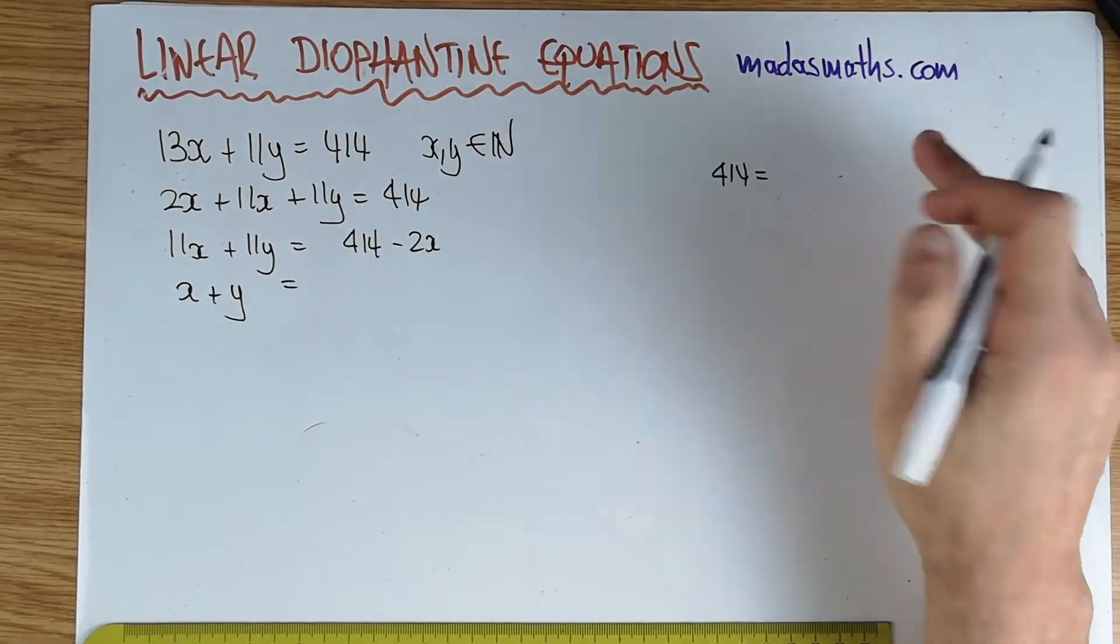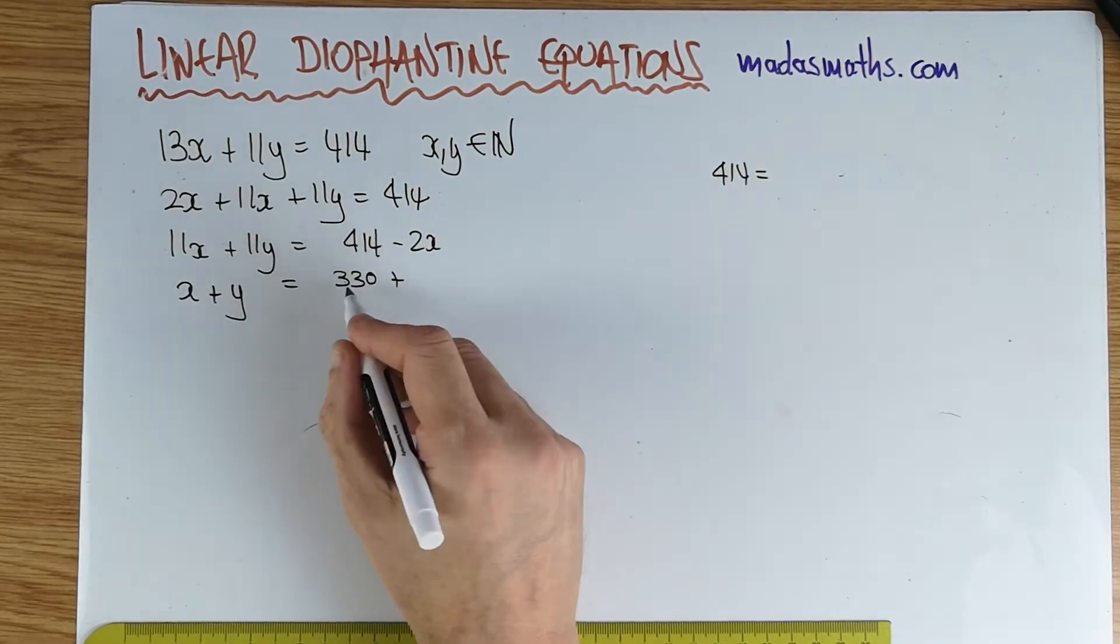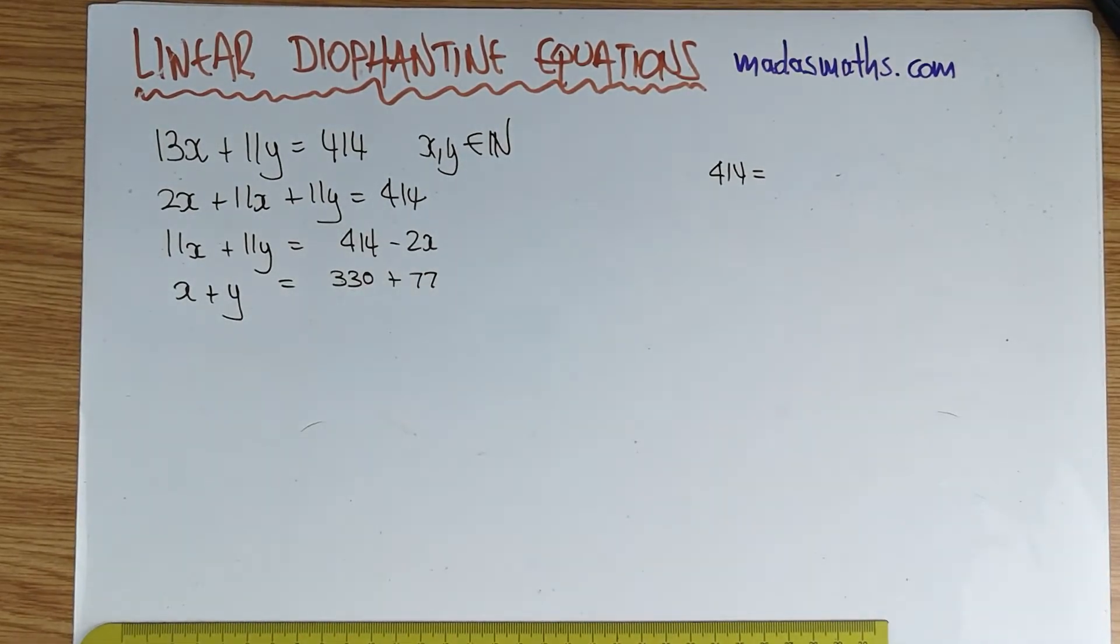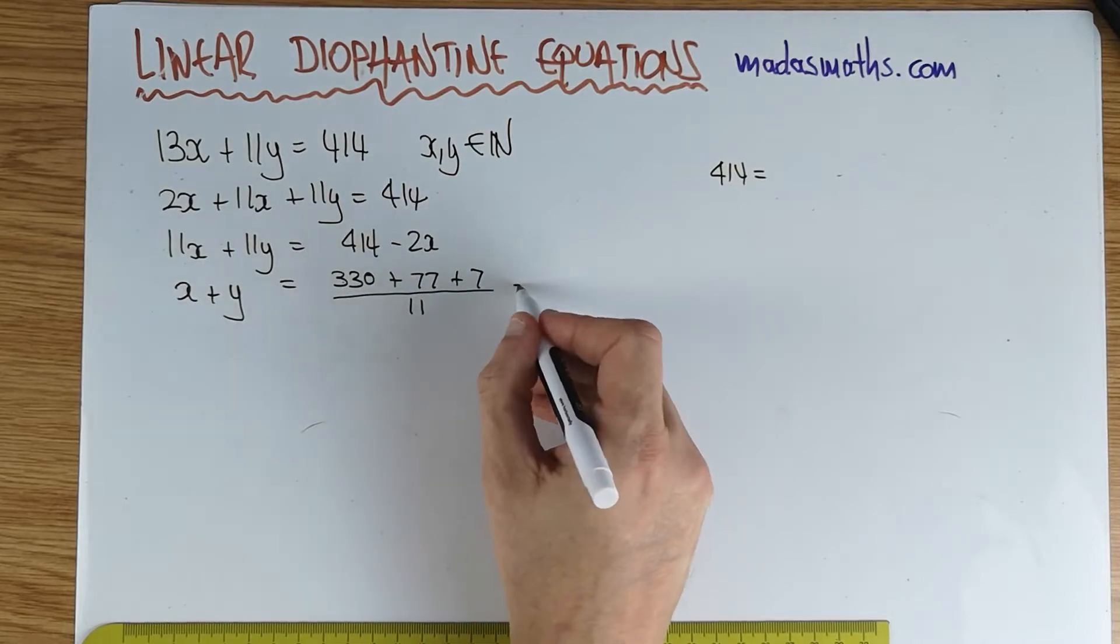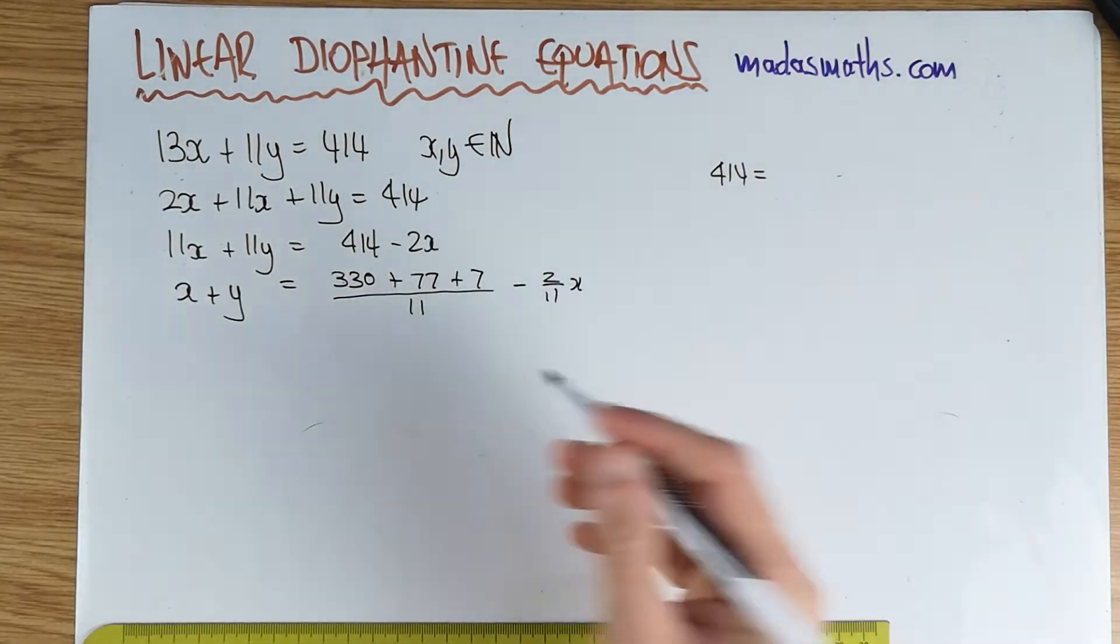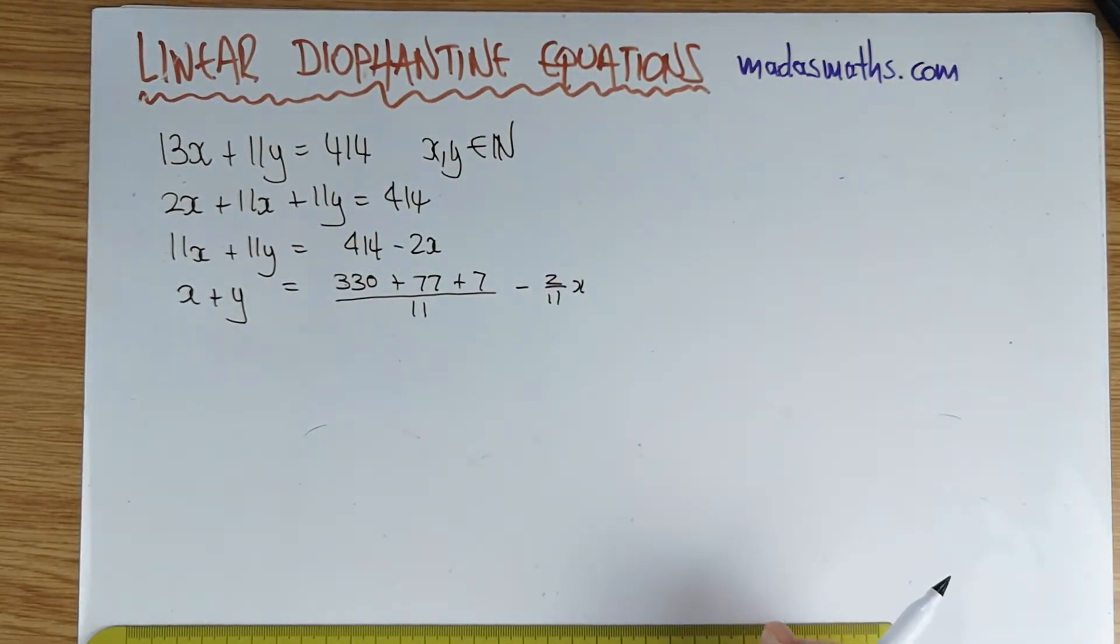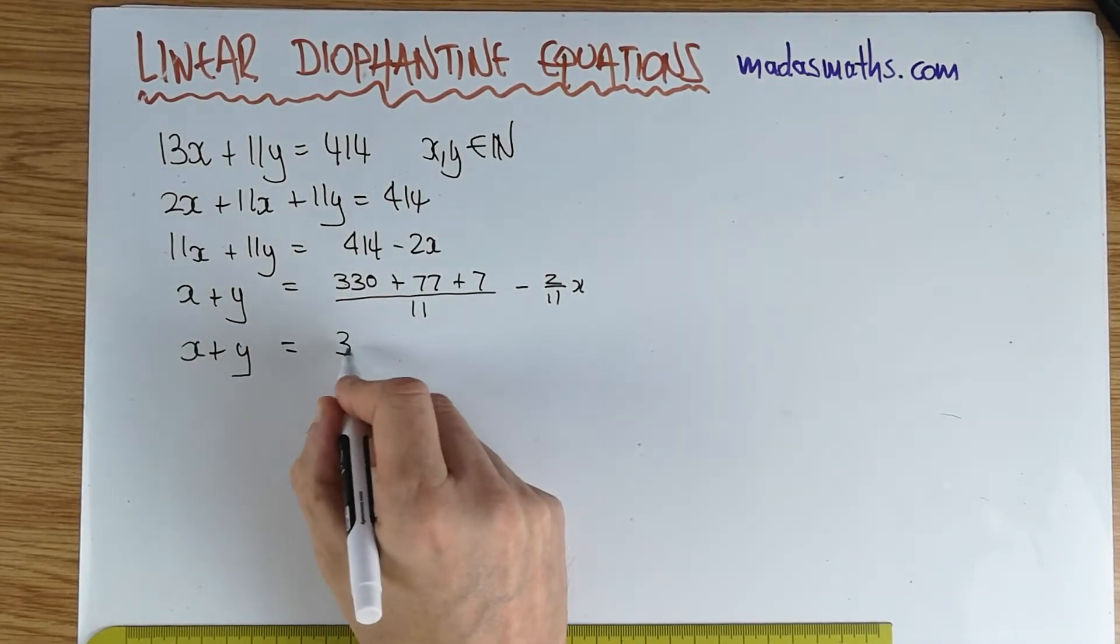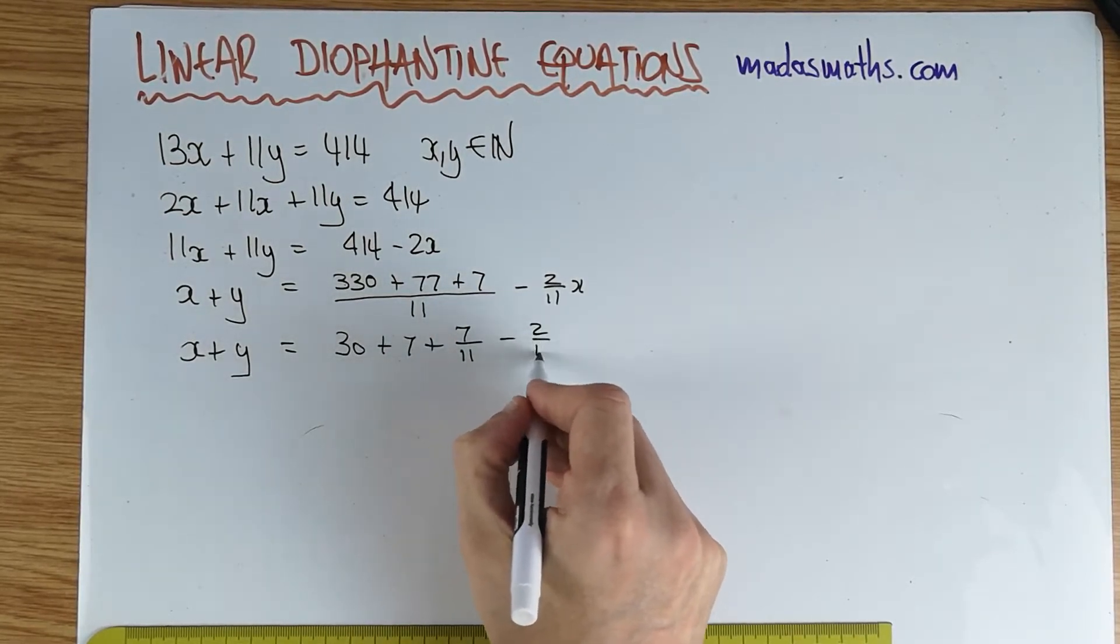That's 297 plus 117. So this is my division, 330 that divides by 11, that I need to go to 414 by another number divisible by 11, so that's 77. So x plus y is equal to 30 plus 7 plus 7/11 minus 2/11 x.